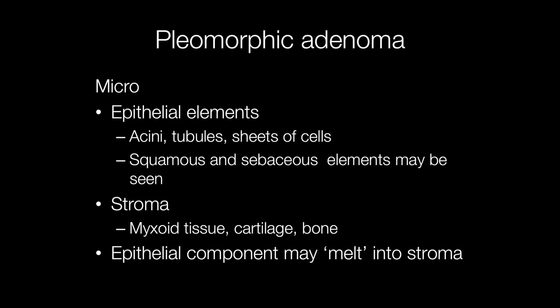Histologically, the epithelial elements are present as acini, tubules or sheets of cells, and there may be squamous and sebaceous elements present. The stroma is typically myxoid with areas of cartilage and sometimes bone, and the epithelial component may appear to melt into the stroma.